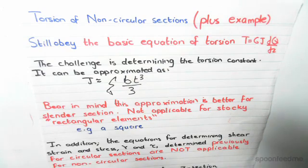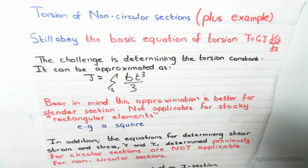Like for example, an I section would have two flanges and one web, so we do the sum of both flanges and the web. Bear in mind this approximation is better for slender sections, so thinner sections, but it's not really applicable for stocky rectangular elements like a square.